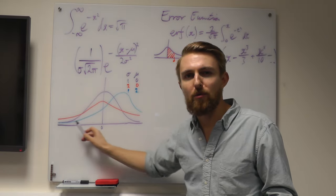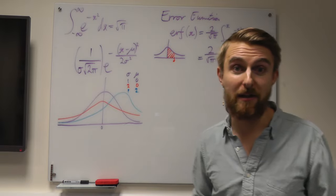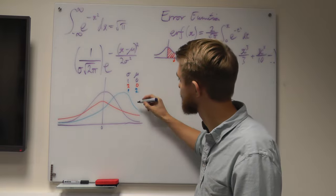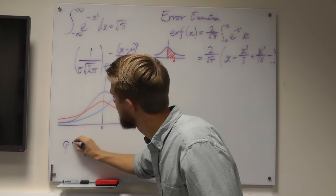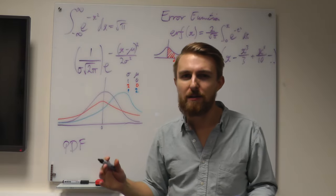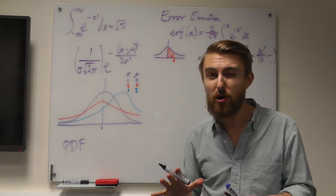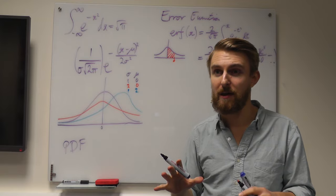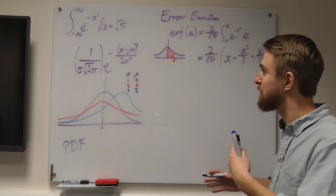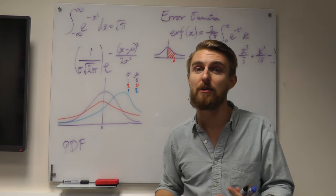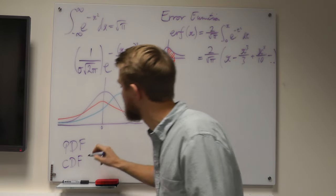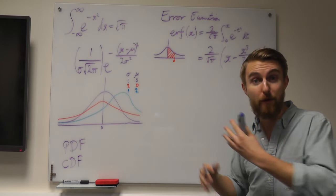If we use the normal distribution to represent the probability of a random variable, we call it a PDF — a probability density function. Importantly, the height of our PDF at any point does not tell us the probability. To find a probability we have to integrate the area underneath it, which means we need something called a cumulative distribution function, or CDF.